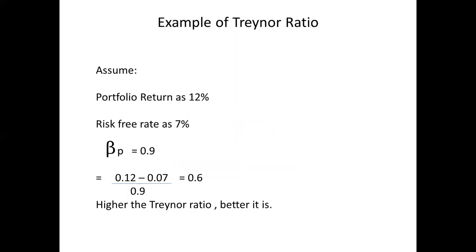Here is a simple example. Assume the return for the portfolio is 12%, the risk-free rate or treasury rate is 7%, and the beta for the portfolio is 0.9. Calculating the ratio: RP is 0.12 minus RF which is 0.07, divided by beta of the portfolio which is 0.9. The answer is 0.6. Higher the Treynor Ratio, better it is.